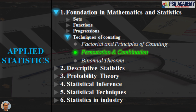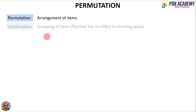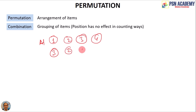In this video we will talk about permutation and combination. Permutation is about the arrangement of items, and combination is about the grouping of those items. Say you have items 1, 2, 3, and 4 in one arrangement. If you bring 3 to the front and rearrange the others, that is another arrangement. These are the different arrangements we can have with these four items.